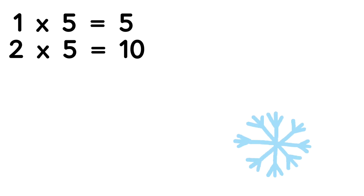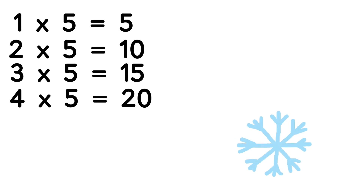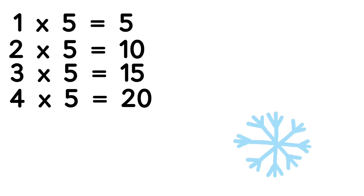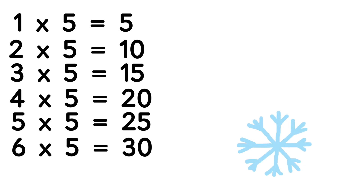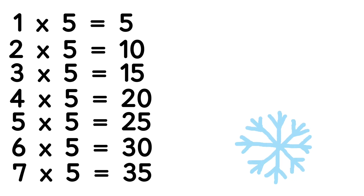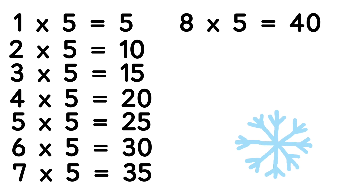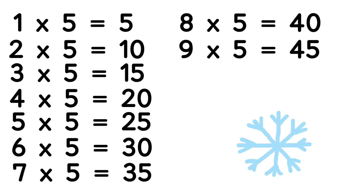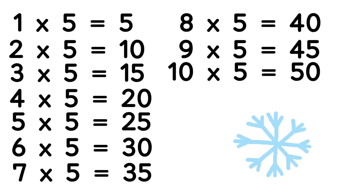Table of 5: 1 five is 5, 2 fives are 10, 3 fives are 15, 4 fives are 20, 5 fives are 25, 6 fives are 30, 7 fives are 35, 8 fives are 40, 9 fives are 45, 10 fives are 50.